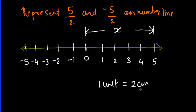Now you have to represent 5/2. The reason I am taking 1 unit equal to 2 cm is because I have to divide the distance by 2. If the total length is divisible by 2, it is convenient to locate the point easily. If I had taken 1 unit equal to 1 cm, the distance from 0 to 5 would be 5 cm, and dividing by 2 gives 2.5 cm — dealing with decimals, which I want to avoid. So with 1 unit equal to 2 cm, x equals 10 cm. Divide by 2 — you get 5 cm, and that point corresponds to 5/2.